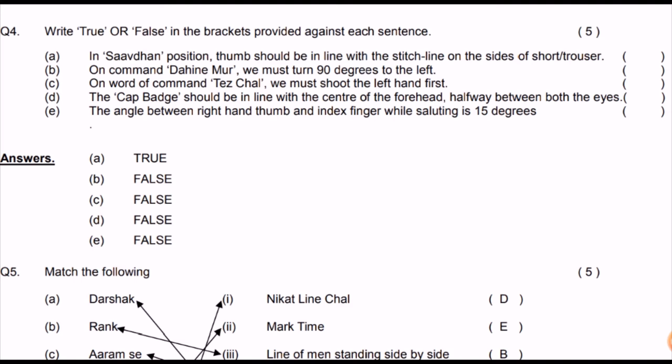True/False questions: In Saavdhan position, thumb should be in line with the stitched line of the trouser — True. On command 'Dainey Mur' we turn 90 degrees right, not left — False (the statement says left, so it is False). The word of command 'Tesh Chal' — the right hand starts marching first, not the left — the statement says left hand first, so it is False.